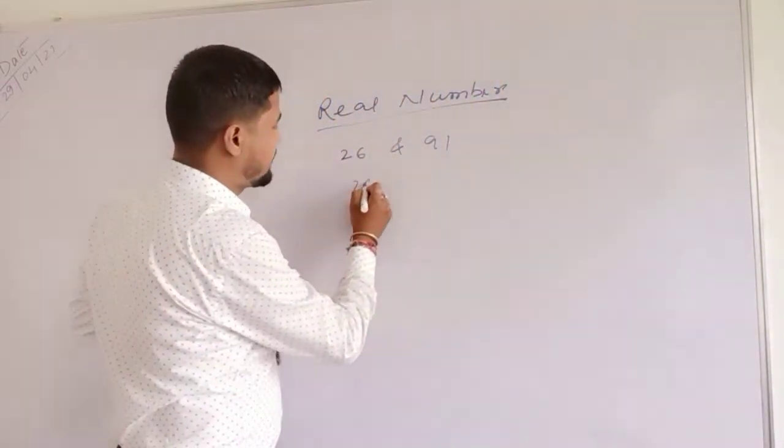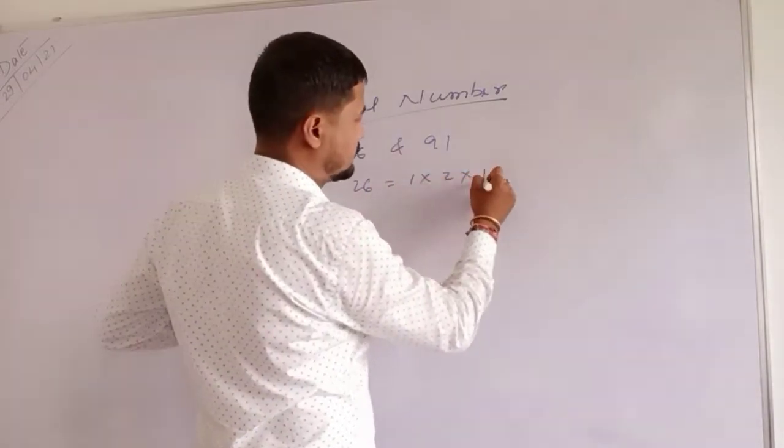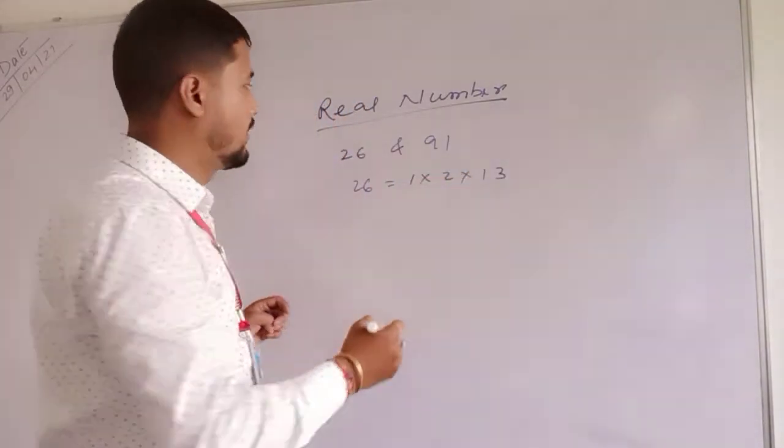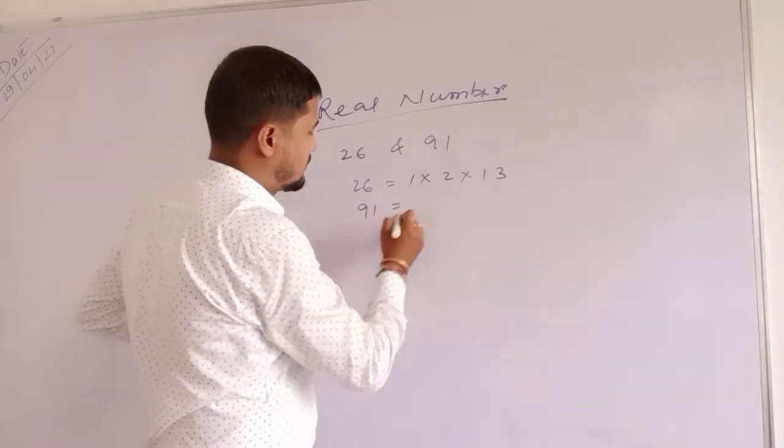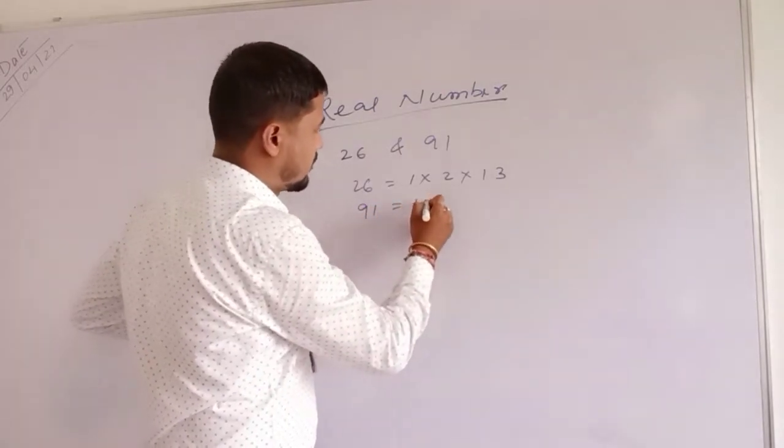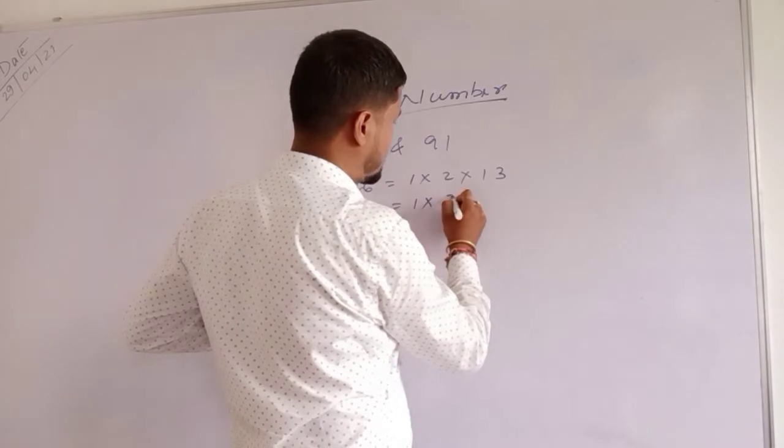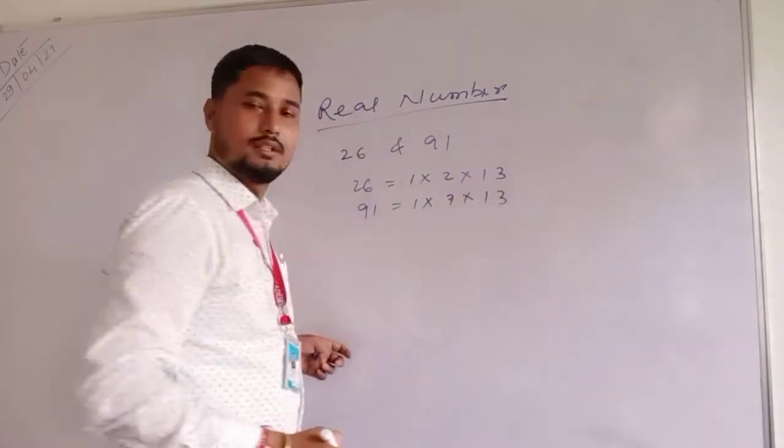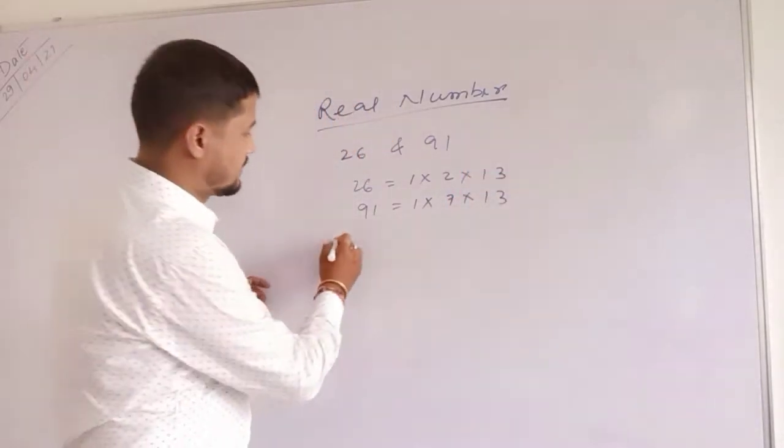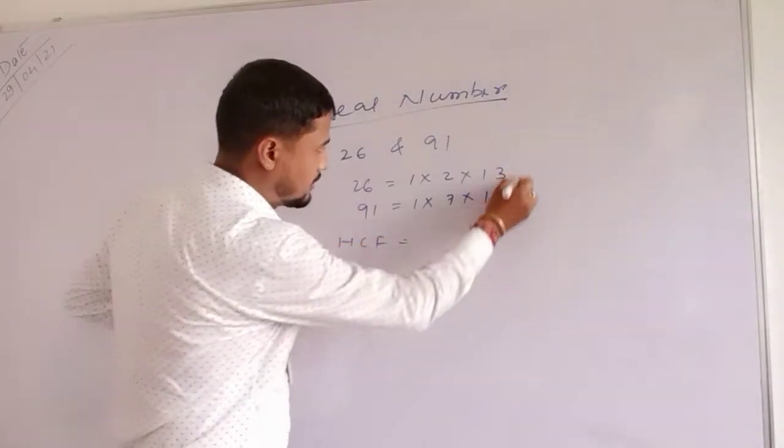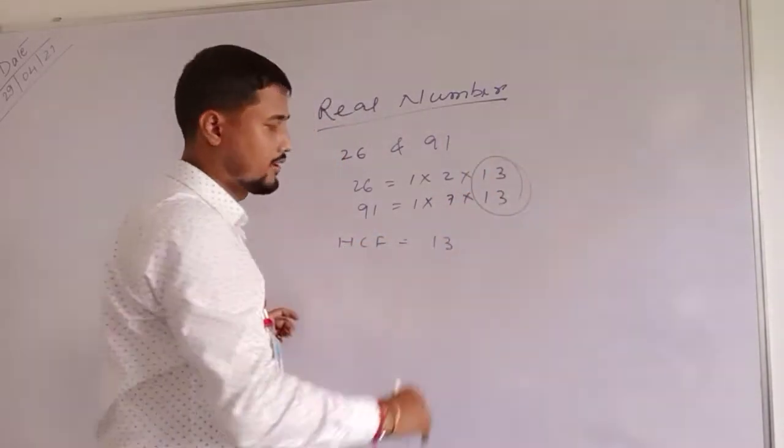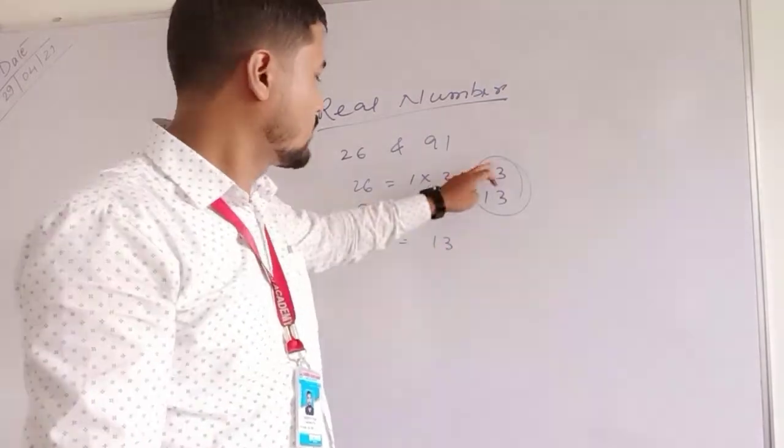26 equals 2 into 13. 91 equals 7 into 13. The HCF - we can see both numbers have 13 common.